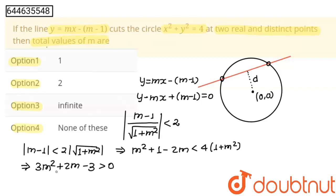There is one calculation mistake here. When the 1 goes to that side, 4 - 1 becomes +3, not -3. So the correct inequality is 3m² + 2m + 3 > 0.